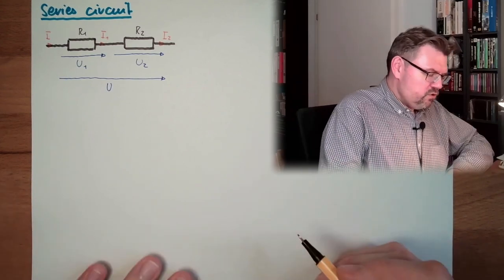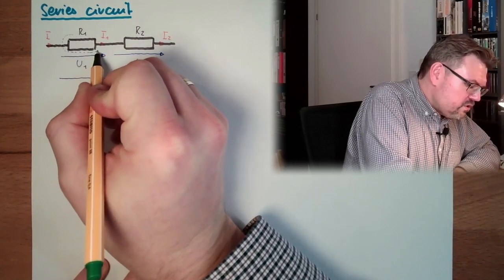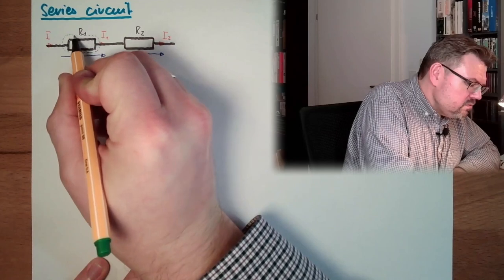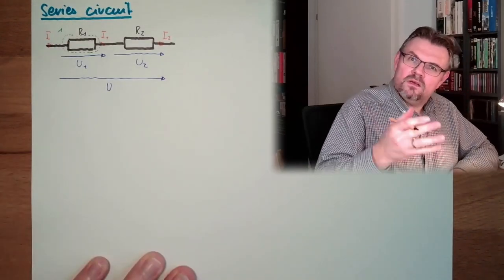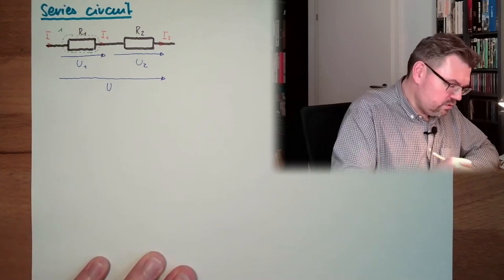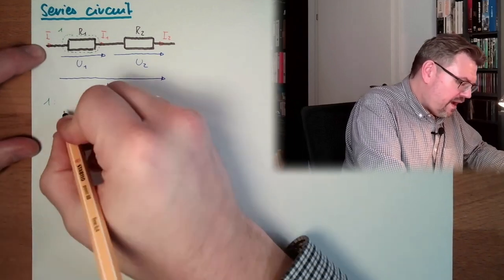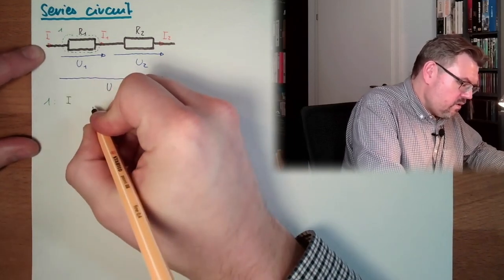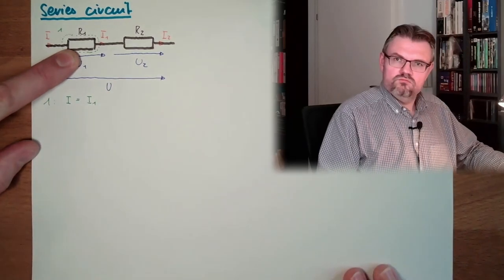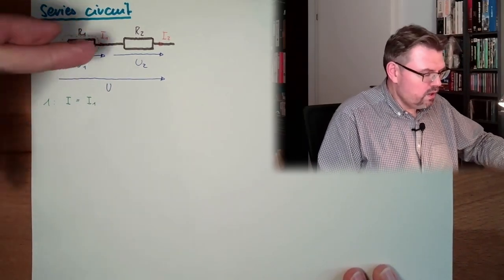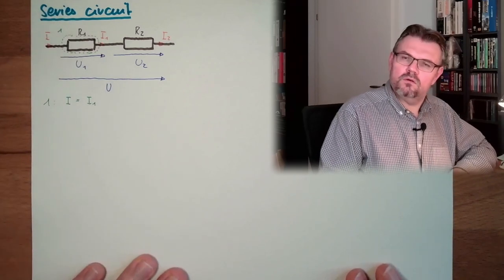Now we also said whatever is inside a junction is inside a junction, it does not really matter. So let's assume this here is one node, one junction, Node 1. Let's write down Kirchhoff's first law for this node. For node 1, we see what is going in, I, equals what is going out, I1.